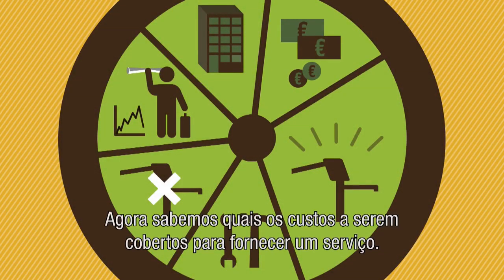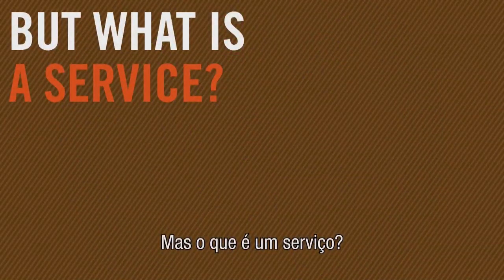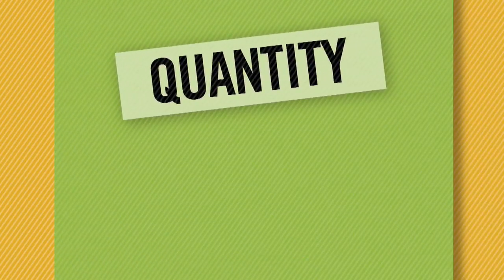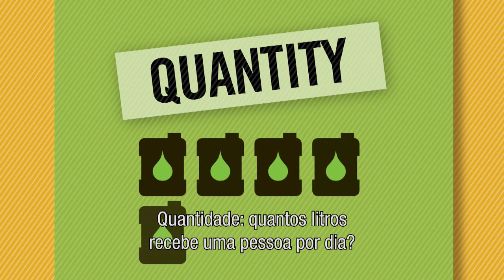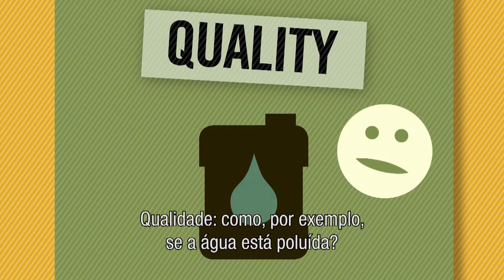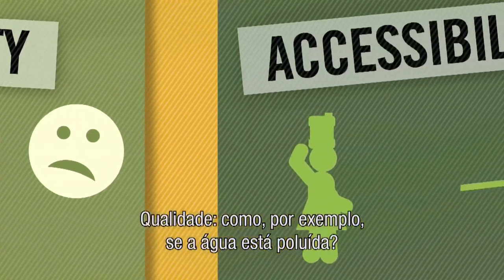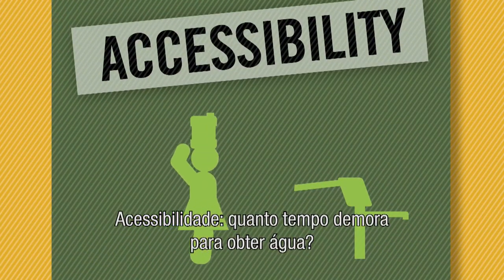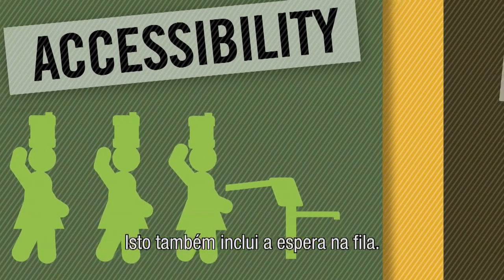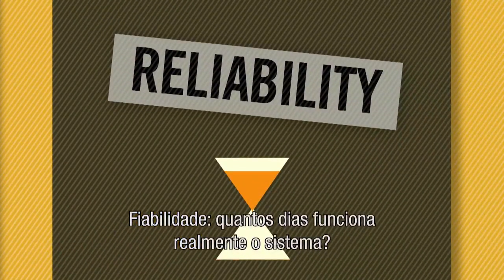Now we know what costs have to be covered to provide a service. But what is a service? How can we measure what people receive for their money? The four indicators are: Quantity — how many litres does one person get in a day? Quality — for example, is the water polluted? Accessibility — how long does it take to get water, including waiting in line? And Reliability — how many days is the system actually working?